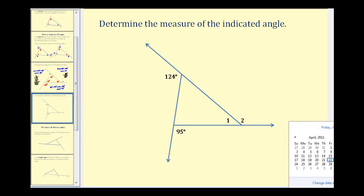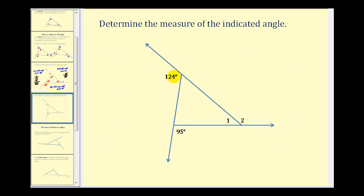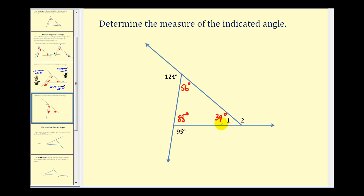Let's take a look at another example — this one will go a little bit quicker. The interior and exterior angles form a linear pair, so their sum is 180 degrees. 180 minus 124 gives us 56 degrees for one angle, and 180 minus 95 gives us 85 degrees for another. The sum of the interior angles is 180 degrees: 56 plus 85 is 141, so 180 minus 141 gives us 39 degrees. Then angles one and two form a linear pair, so 180 minus 39 gives us 141 degrees for angle two.